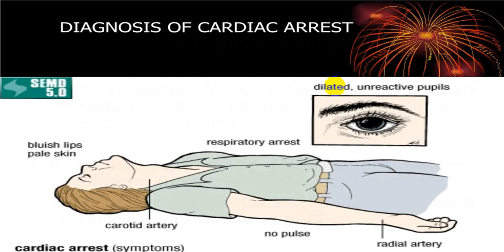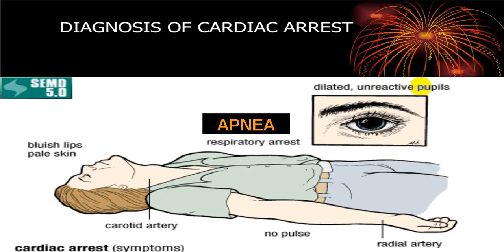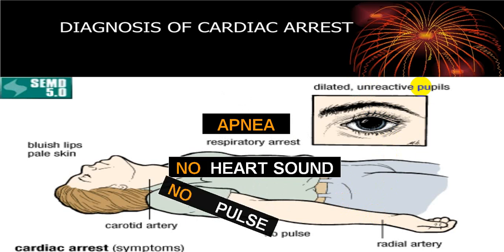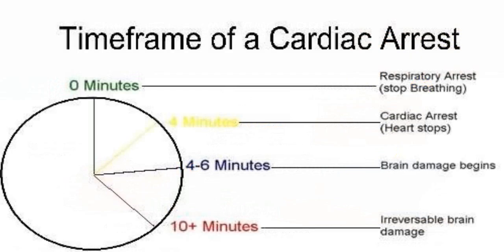Recognition of cardiac arrest is easy by clinical grounds: appearance of cyanosis, no respiratory movement, no pulse, no blood pressure — carotid artery, femoral artery, radial — all not palpable. Pupil is dilated, fixed, non-reactive. Apnea, no heart sounds, no pulse, no blood pressure. If a person stops breathing, within four minutes they will have cardiac arrest. In four to six minutes brain damage begins, and in ten minutes there is irreversible brain damage. So early diagnosis and early intervention, early resuscitation, can reduce the incidence.